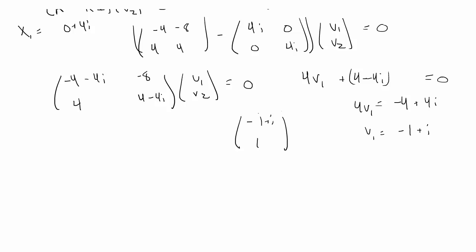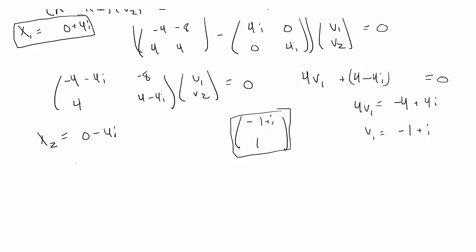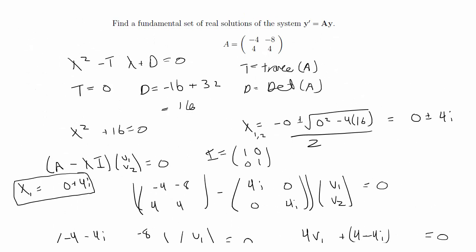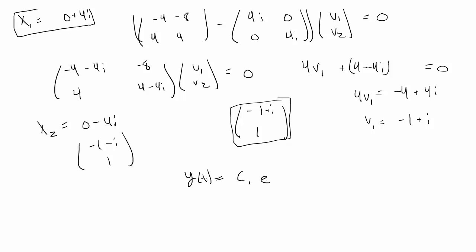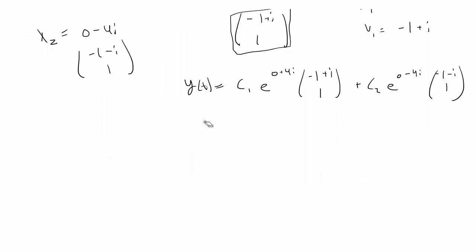Now we have the eigenvector and eigenvalue for lambda 1. The second eigenvalue is lambda 2 = 0 minus 4i, and its eigenvector is [-1-i, 1], just the conjugate of the first. If we were writing the imaginary solution, y(t) would equal c1·e^(4i)·[-1+i, 1] plus c2·e^(-4i)·[-1-i, 1]. But since we need real solutions, we go one step further. Since e to the 0 is just 1, we can simplify those terms away.